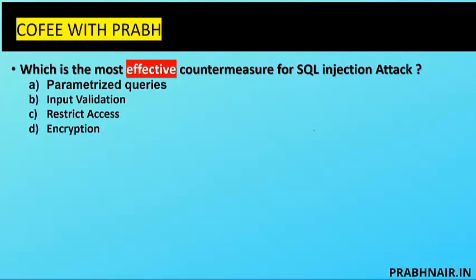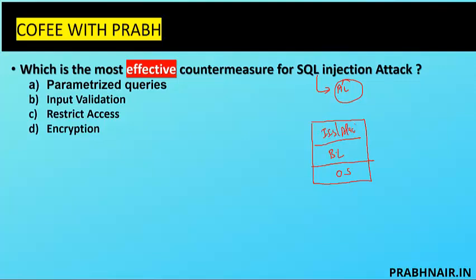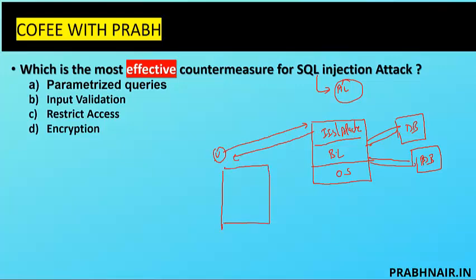Next coffee shot: which is the most effective countermeasure for SQL injection attack? First, remember from the exam: SQL injection is an application-level attack. The application architecture has an OS, business logic layer, and IIS or Apache. The business logic layer is connected with the database. When a user connects to IIS, it provides a login page — whatever you enter in username and password is sent to IIS, then to the business logic layer, which converts it into SQL queries for the database.